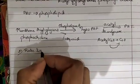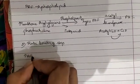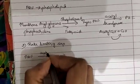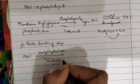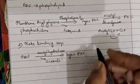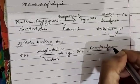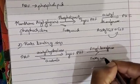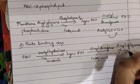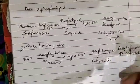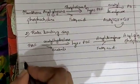In the rate-limiting step, platelet activating factor in the presence of acetyl hydrolase gives out acetate and forms lyso-platelet activating factor again. Then, in the presence of acyl transferase, giving out fatty acid, it forms acyl glycerophosphoryl choline — essentially the opposite reaction occurring in the second step.